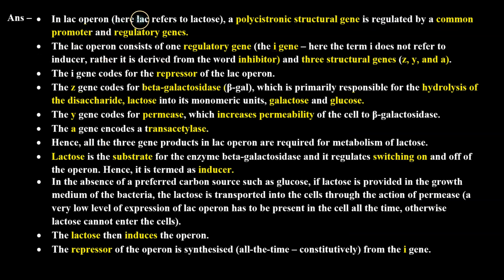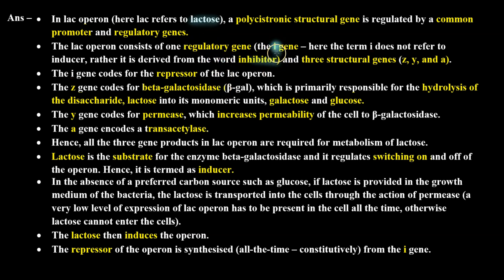So the formal answer: In lac operon, 'lac' refers to lactose. A polycistronic structural gene is regulated by a common promoter and regulatory genes. The lac operon consists of one regulatory gene — the i gene. Note that the term 'i' does not refer to inducer; rather it is derived from the word 'inhibitor', because the product of the regulatory gene inhibits the working of this operon. Students should not confuse i gene with inducer.